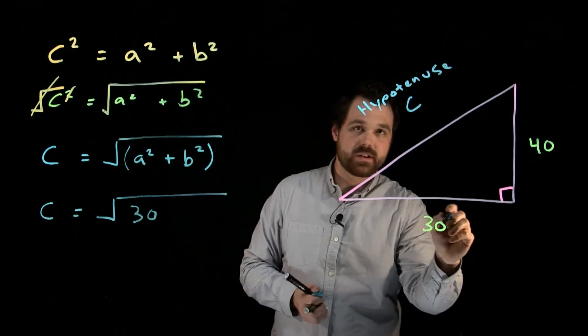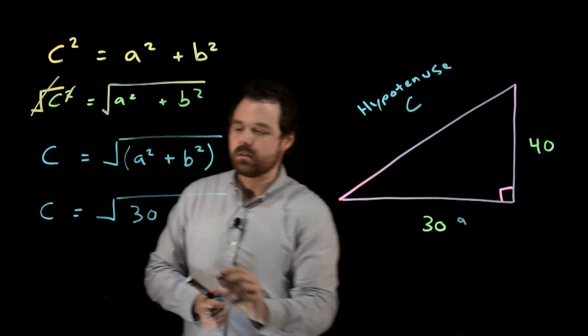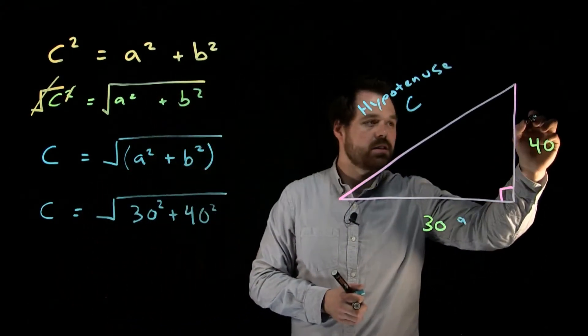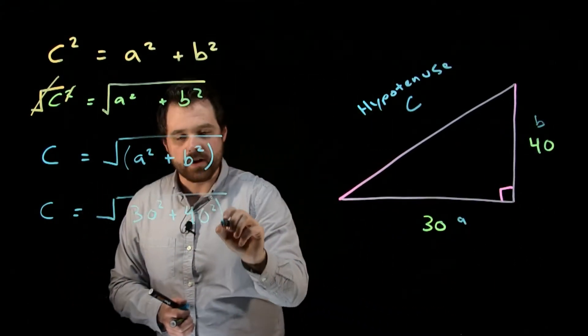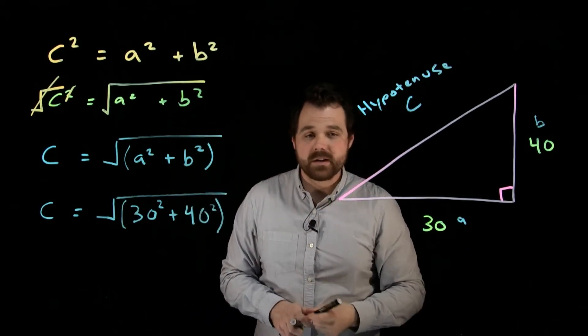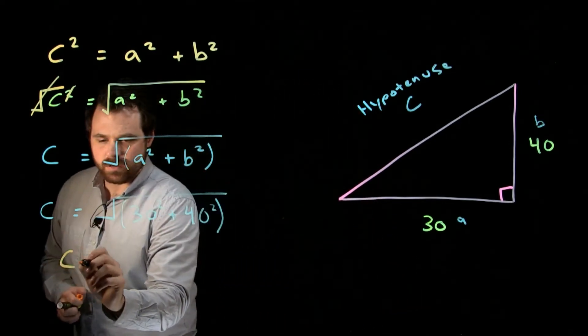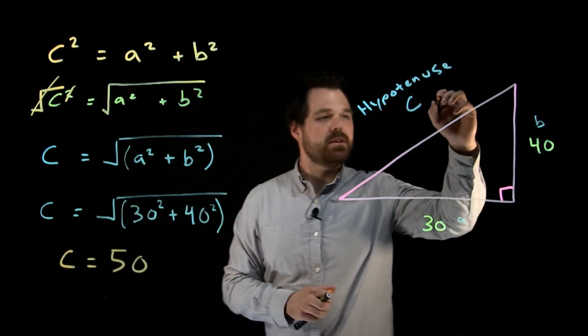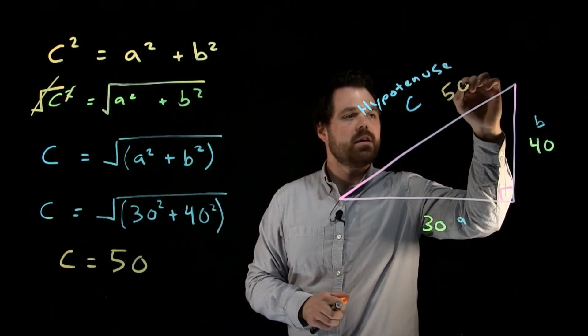So we're calling this A, plus 40 squared, meaning we are calling this B. And we want to put that all into brackets. When we type it into our calculator, at the end of it, we get C equals 50. So that means this side here is 50.